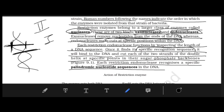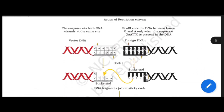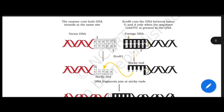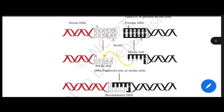Each restriction endonuclease recognizes specific palindromic nucleotide sequences in DNA. The enzyme cuts both DNA strands at the same site. For example, here is the vector DNA — GAATTC — and the foreign DNA also has GAATTC. The enzyme cuts at this site, producing overhanging ends.